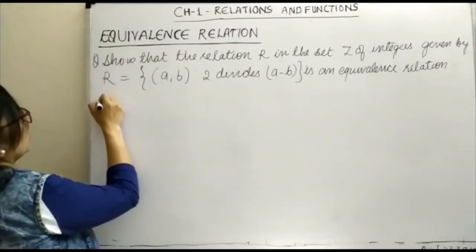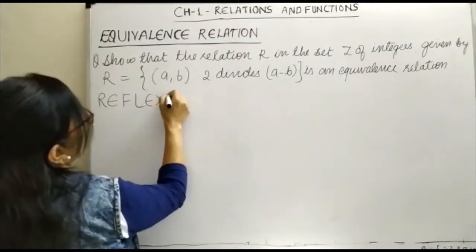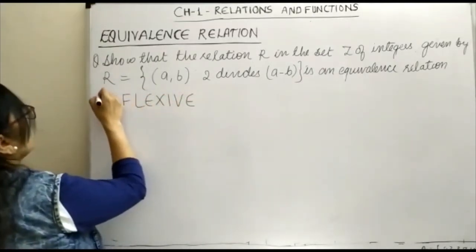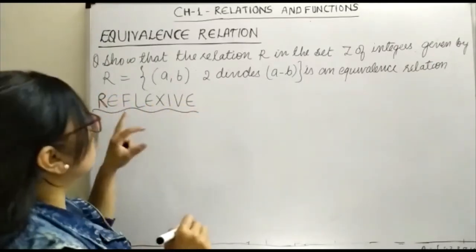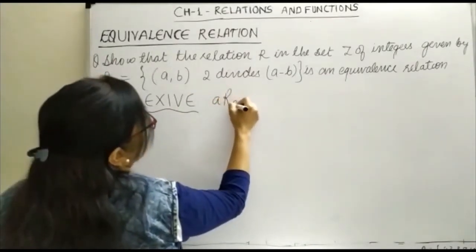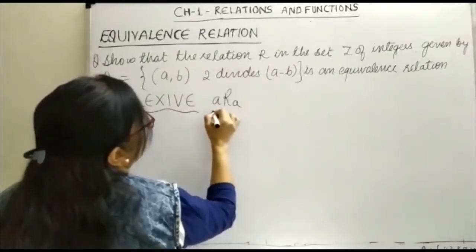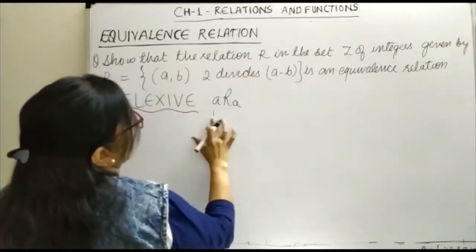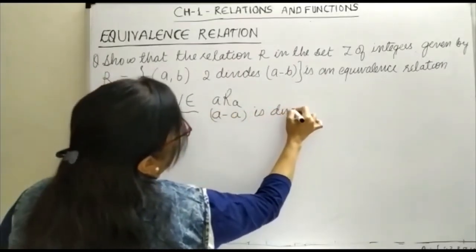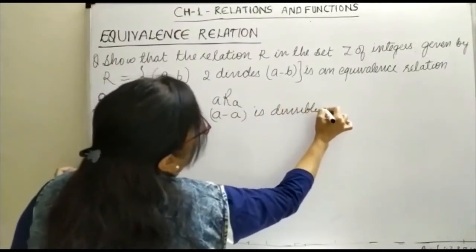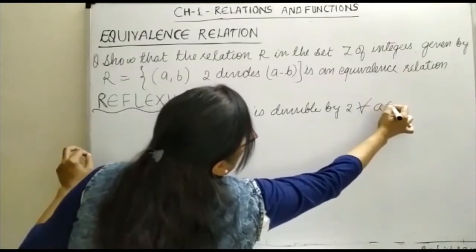The very first property is reflexive. Reflexive property is checked on each element of the given set. We will check that A is related to A. Replace this B by A. So it becomes A minus A is divisible by 2 for all A belonging to Z.